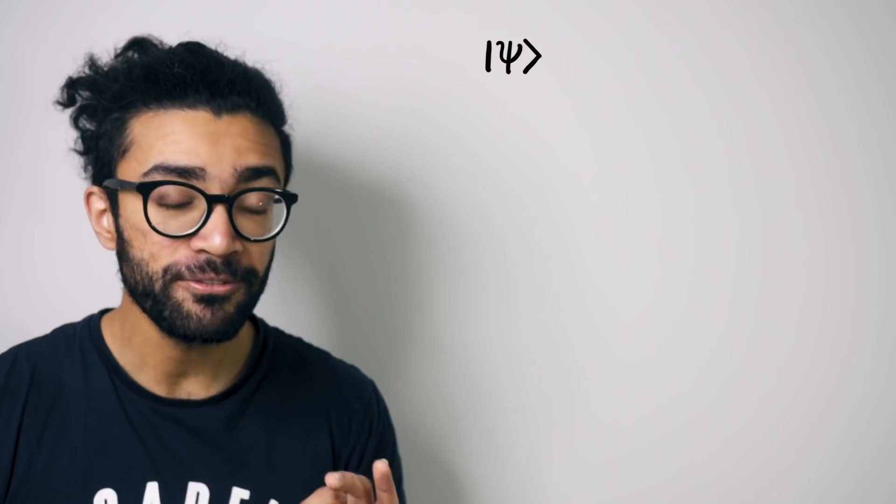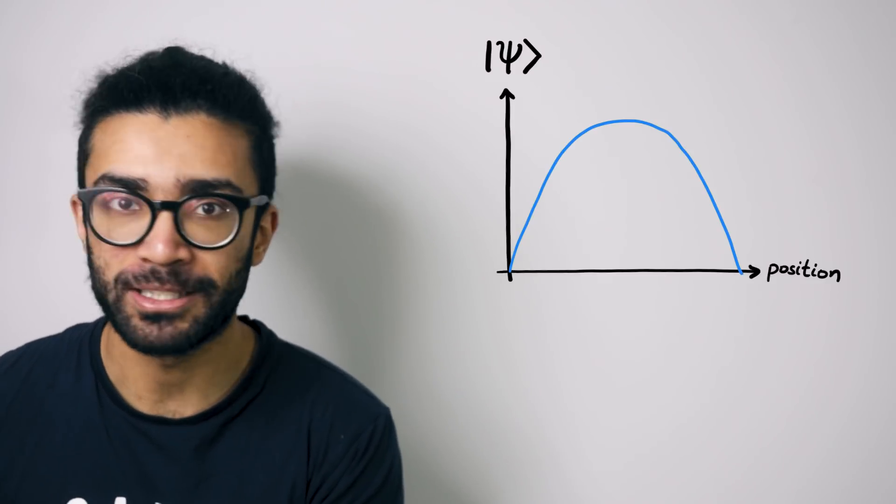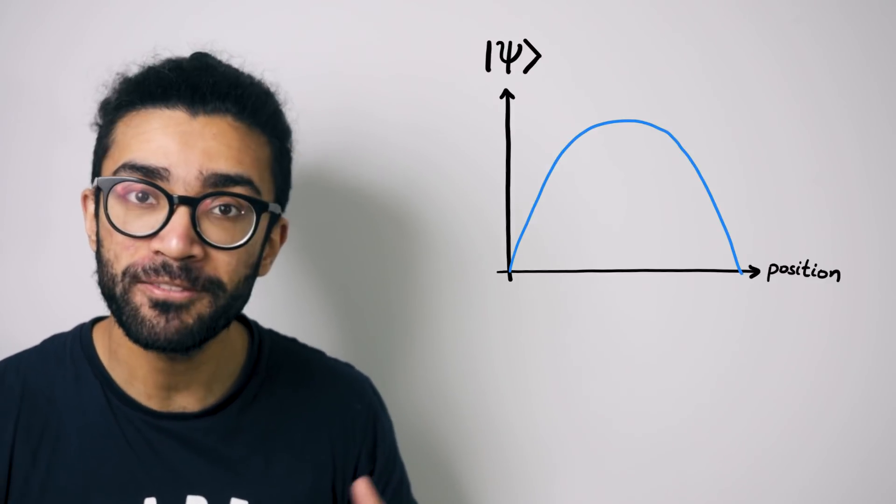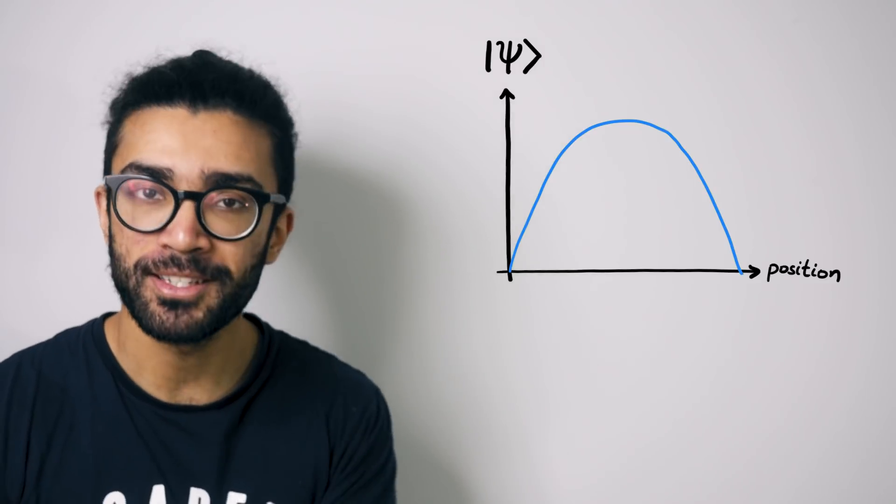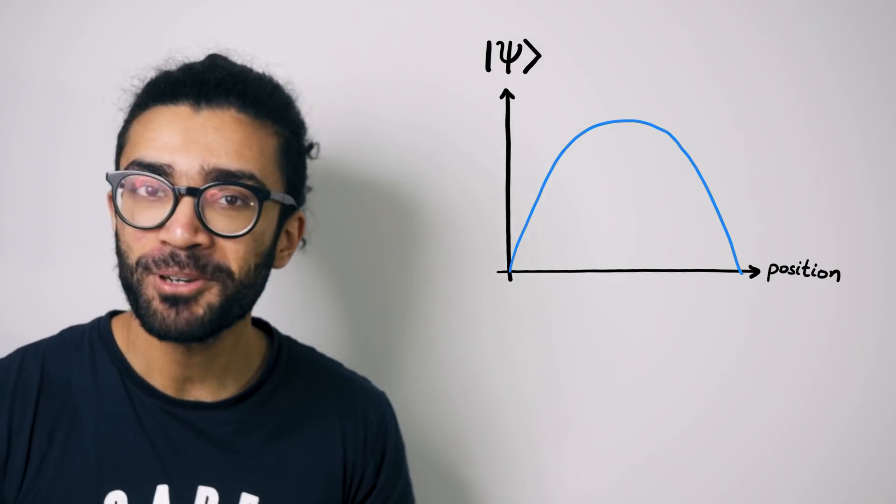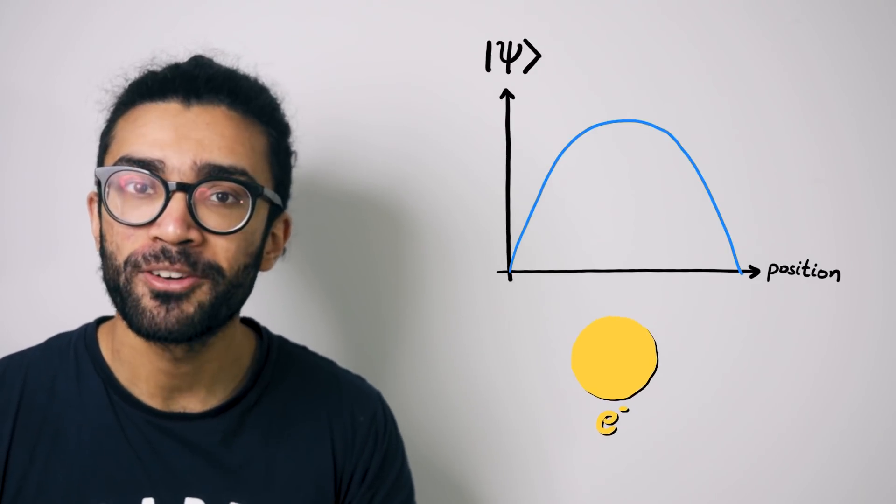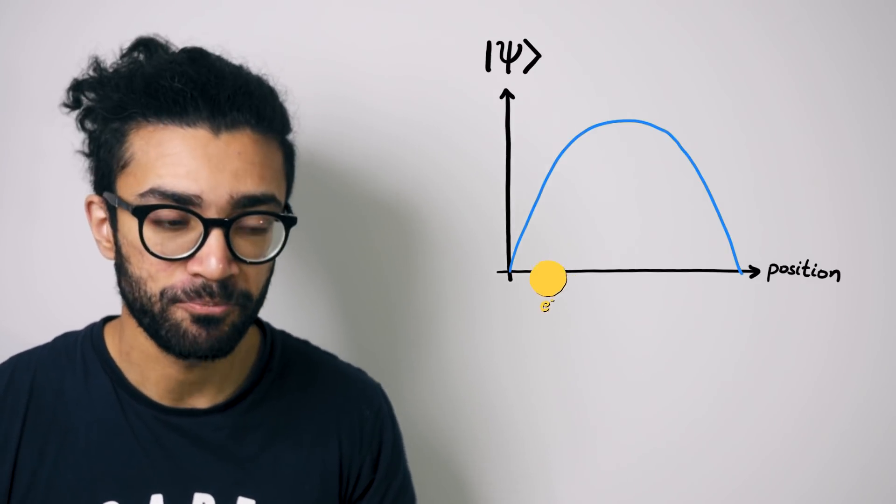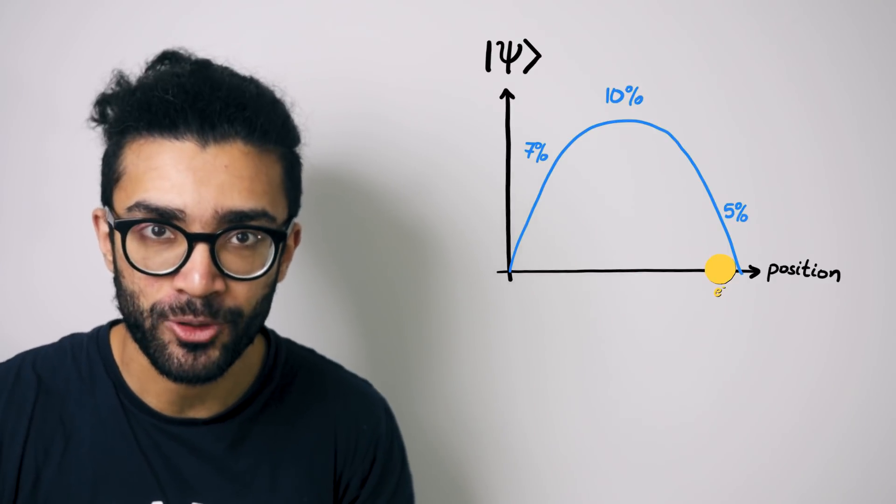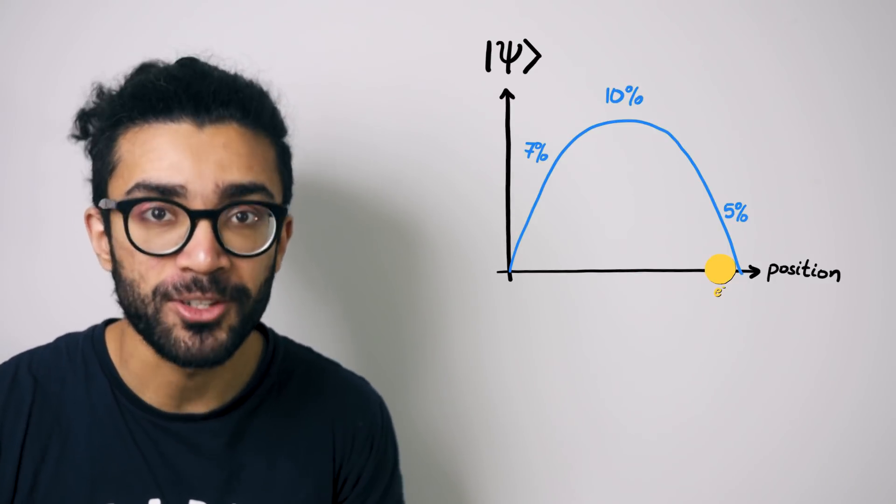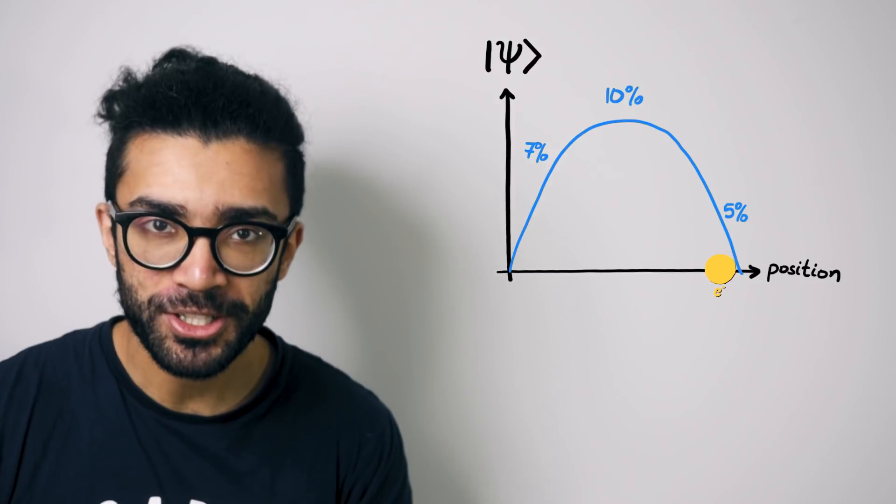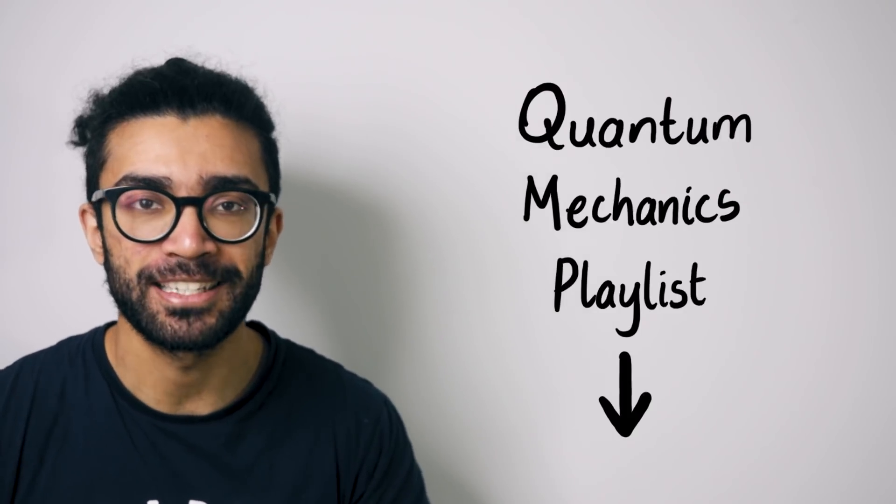Let's start by understanding that a wave function can be thought of as a mathematical function that contains all of the information that we know about the system we happen to be studying. The example I always like to give is that if we're studying a single electron, that's our system, then the wave function contains information about things like how likely we are to find that electron at different points in space and so on. For a more detailed look at wave functions please do check out my quantum mechanics playlist linked below.